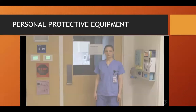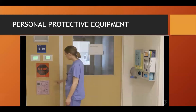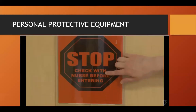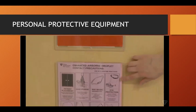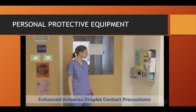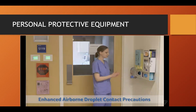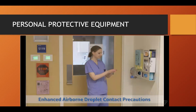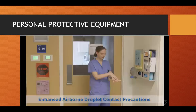When donning PPE, begin by checking which PPE is required by reviewing the signage outside the room. To reduce risk of transmission, ensure hair is pulled back and jewelry is removed or minimized. Next, for enhanced airborne droplet contact precautions, start by performing hand hygiene for 15 to 20 seconds.